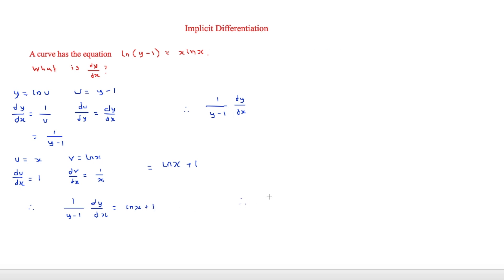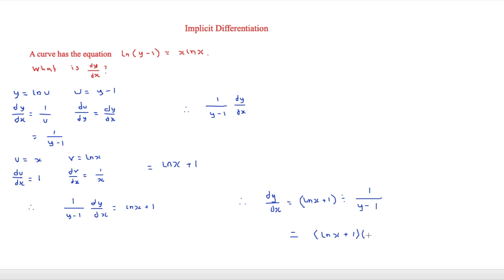We now have (1/(y − 1)) dy/dx equals ln x + 1. To isolate dy/dx, we divide both sides, which means multiplying by the reciprocal. So dy/dx equals (ln x + 1) times (y − 1), and that is our final answer.